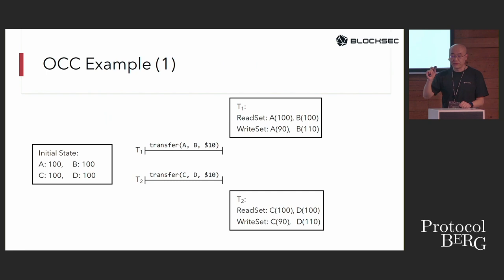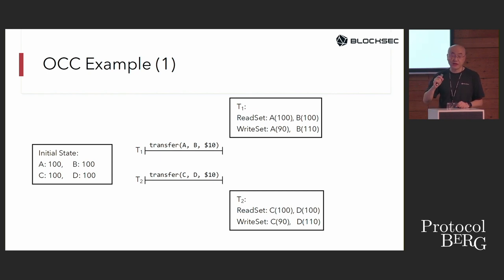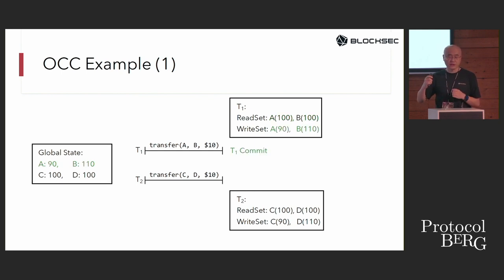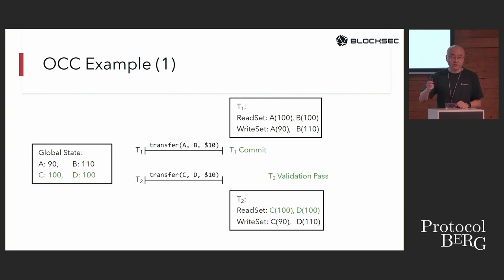For example, with transactions T1 (A to B) and T2 (C to D), we execute both in parallel. After T1 executes, we perform validation to check for dependencies — this passes and the state change is committed. For T2, the validation also passes and the state change is committed.